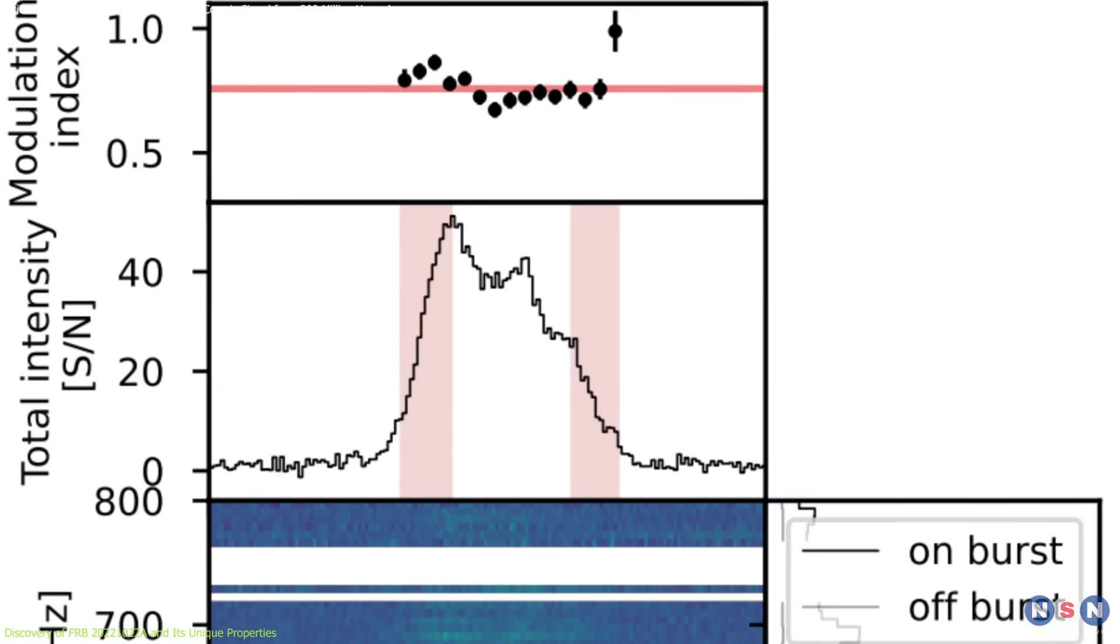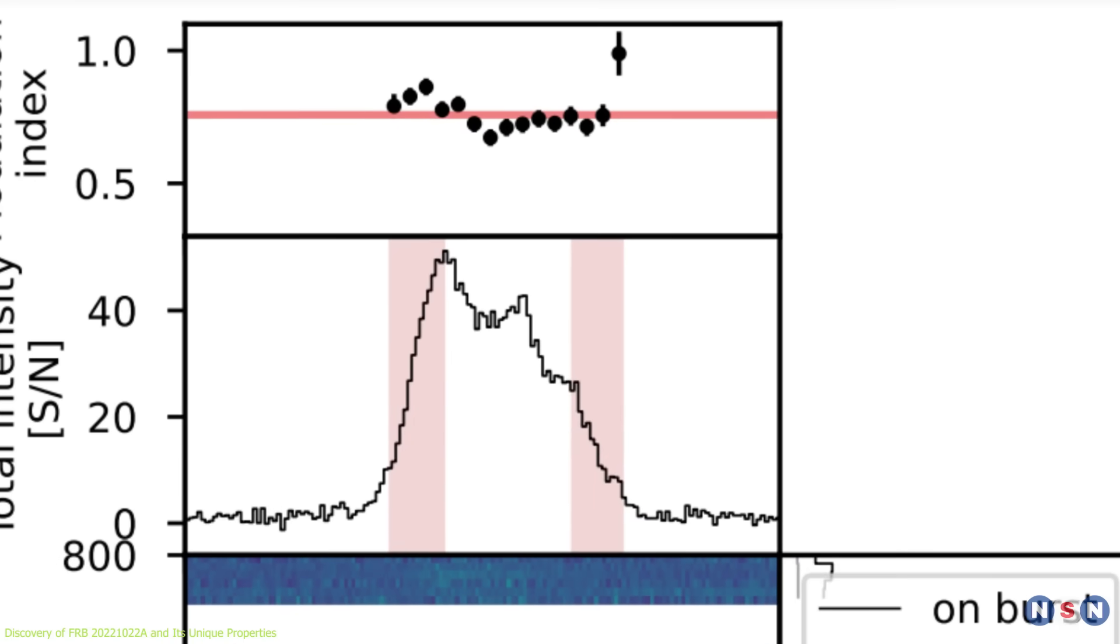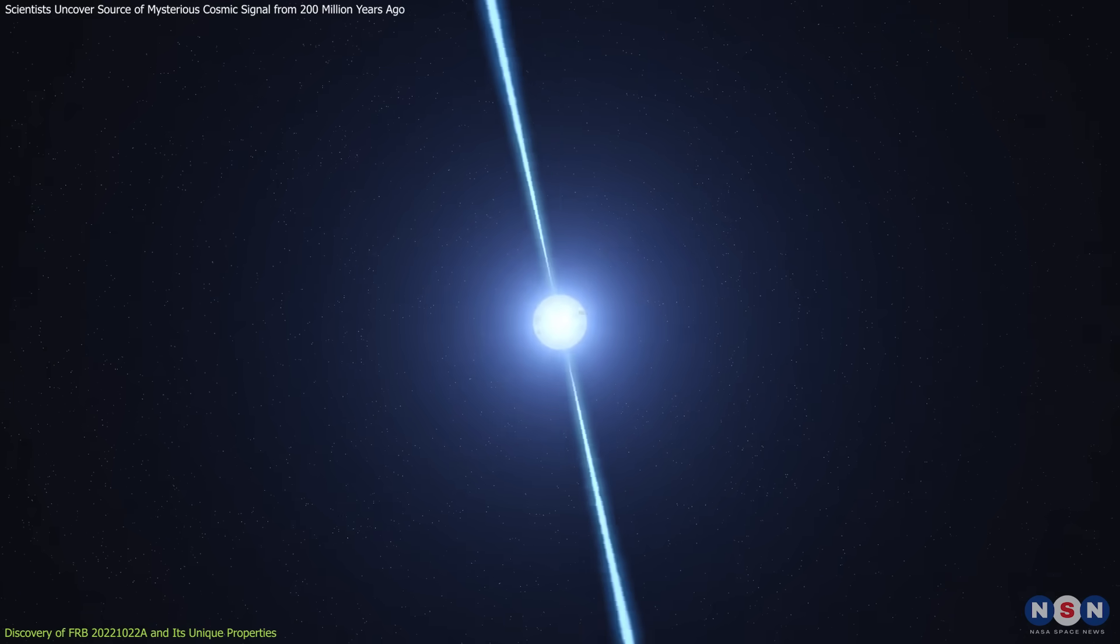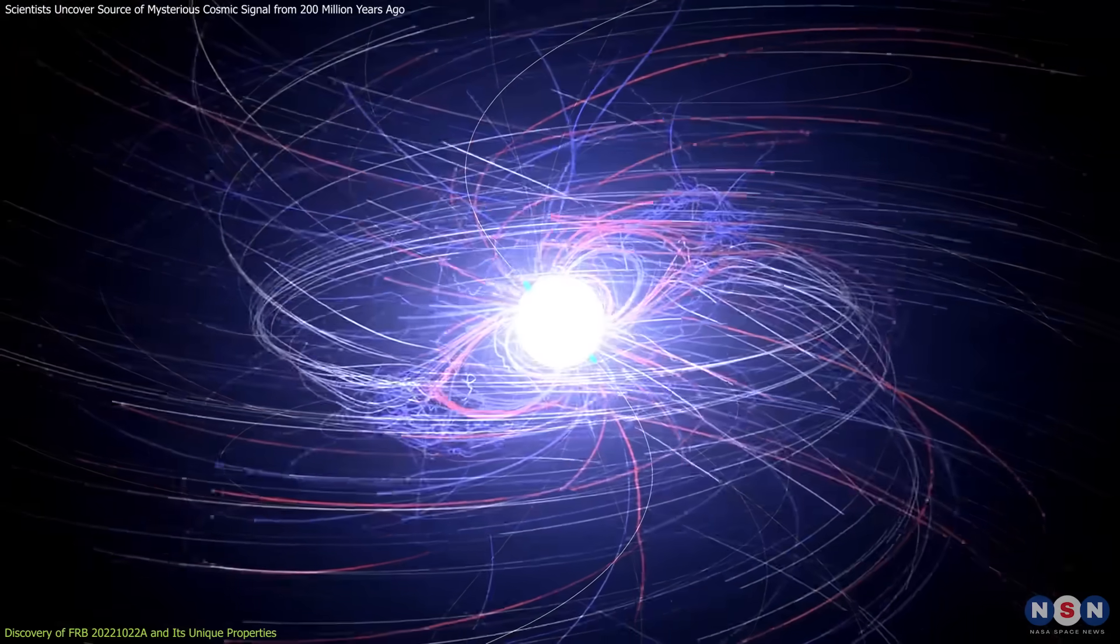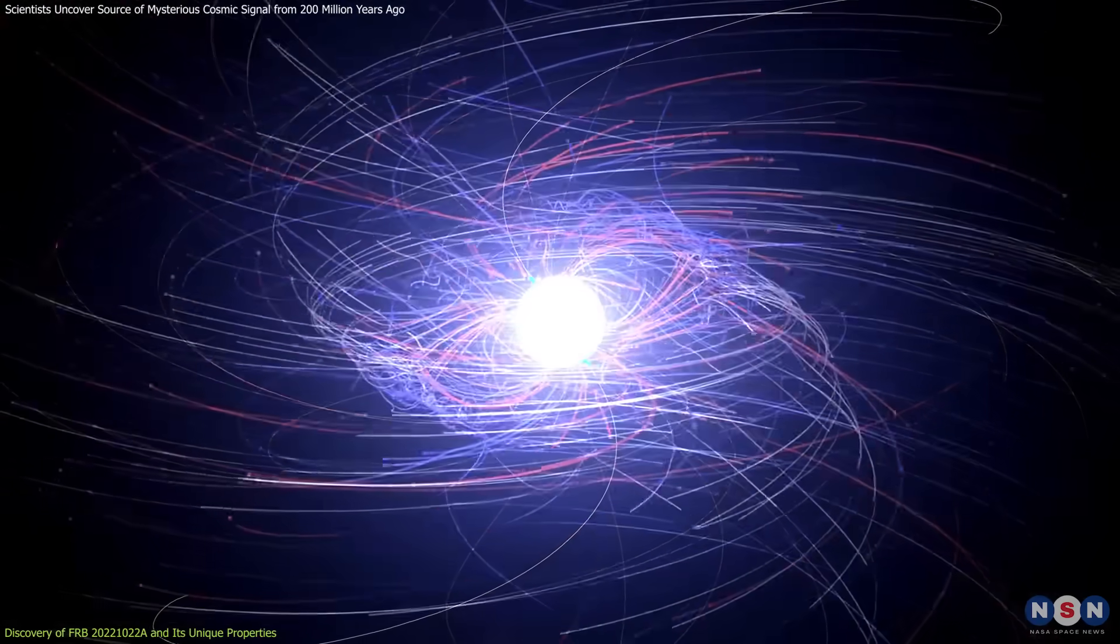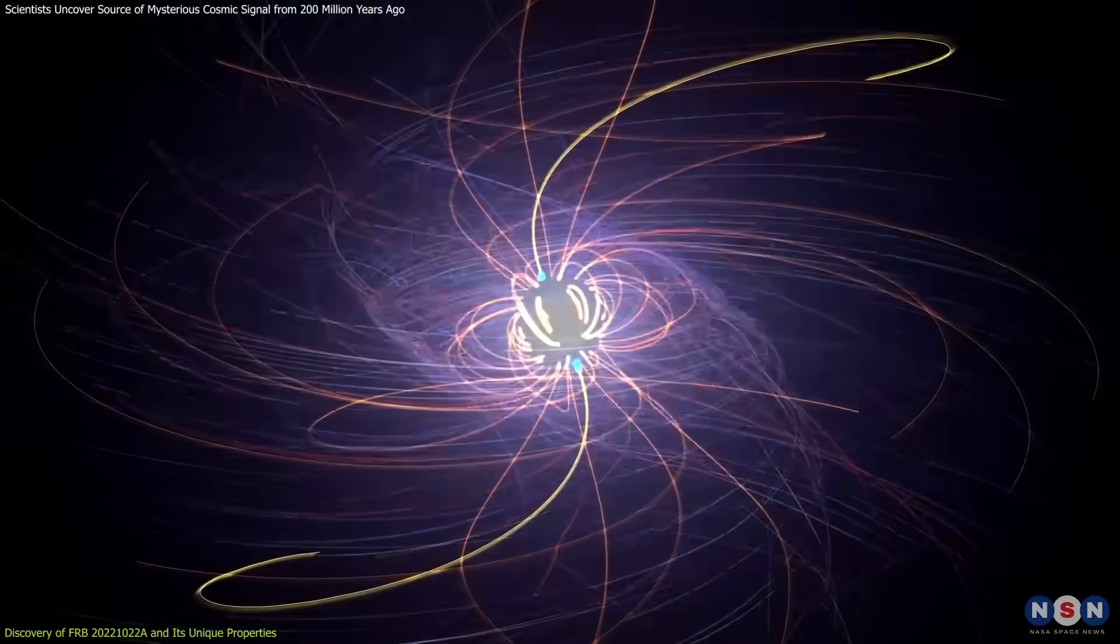What made this burst even more fascinating was its highly polarized signal, and an S-shaped curve in its polarization angle, a signature that hinted at a rotating source. These characteristics pointed to a highly magnetized, spinning neutron star, also known as a magnetar.